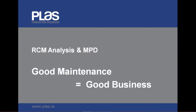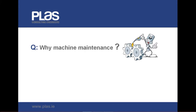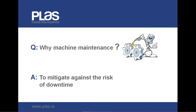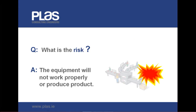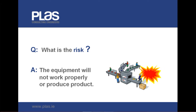Hello and welcome to our brief video which outlines how a structured approach to maintenance management makes for good business. You might well ask why we maintain machinery. It's not simply because the manual says so. In reality it's to reduce the risk of downtime, reduce cost of ownership and avoid early replacement. The real risk of course is that production stops, because then no one is getting paid.